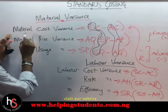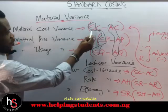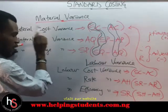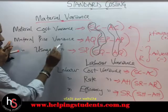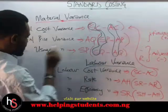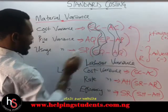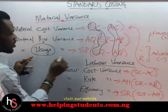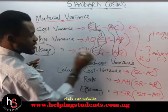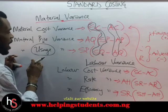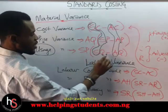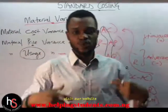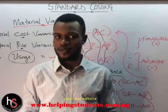To summarize: material cost variance uses standard cost minus actual cost; material price variance uses standard price minus actual price; material usage variance uses standard quantity minus actual quantity. This has been a brief introduction to standard costing and its variances.